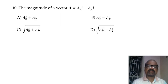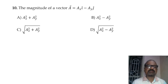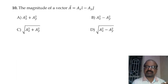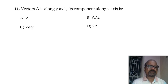Next, the magnitude of vector A. You can find out the magnitude — it is the square root of Ax squared plus Ay squared plus Az squared. So the right answer is the square root of Ax plus Ay components.